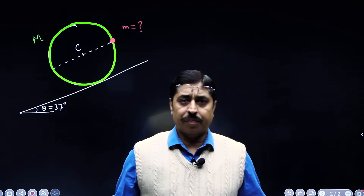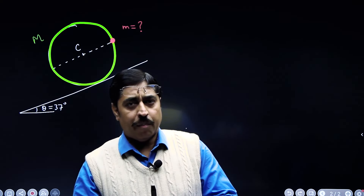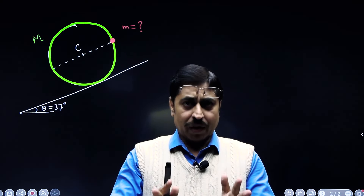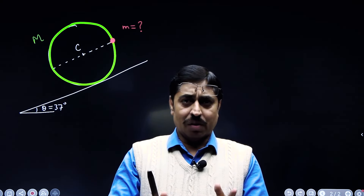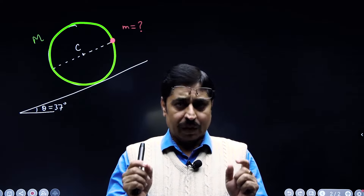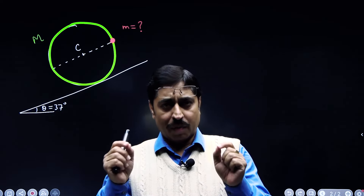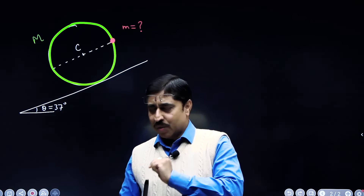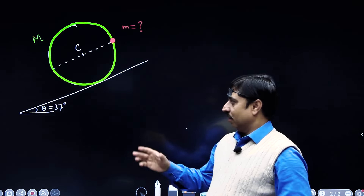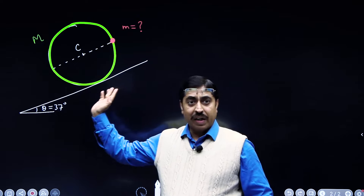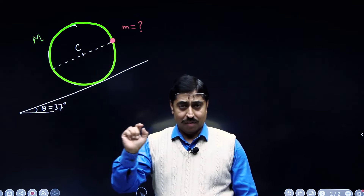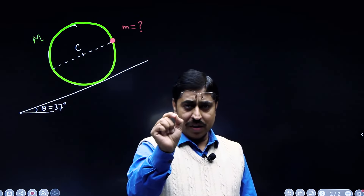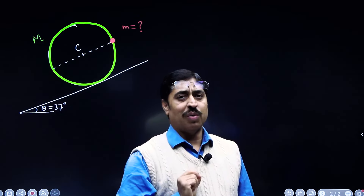Hello students, I am back again with a fairly simple question based on equilibrium of bodies. In this particular question, there is an inclined plane having an inclination angle of 37 degrees with the horizontal.